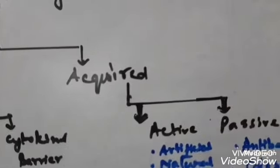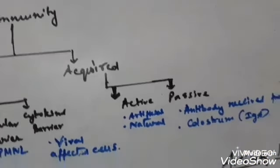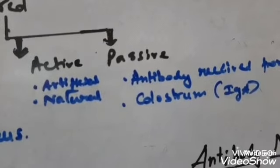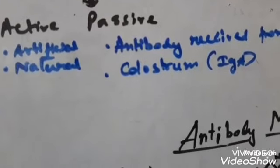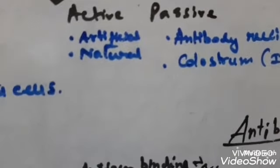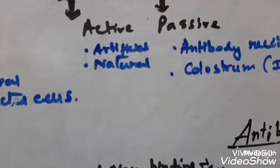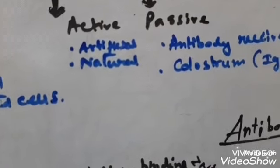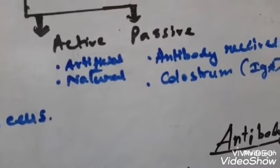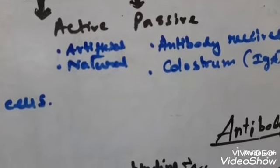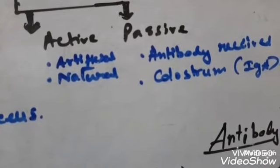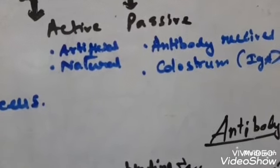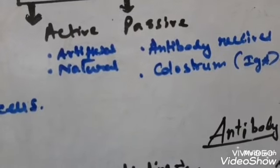The next topic is acquired immunity, which is divided into two types: active immunity and passive immunity. Active immunity is the immunity that develops in our body when it is exposed to an antigen — which may be in the form of a living or dead microbe, or a protein. Antibodies are produced in response, whether during immunization or any type of infection.